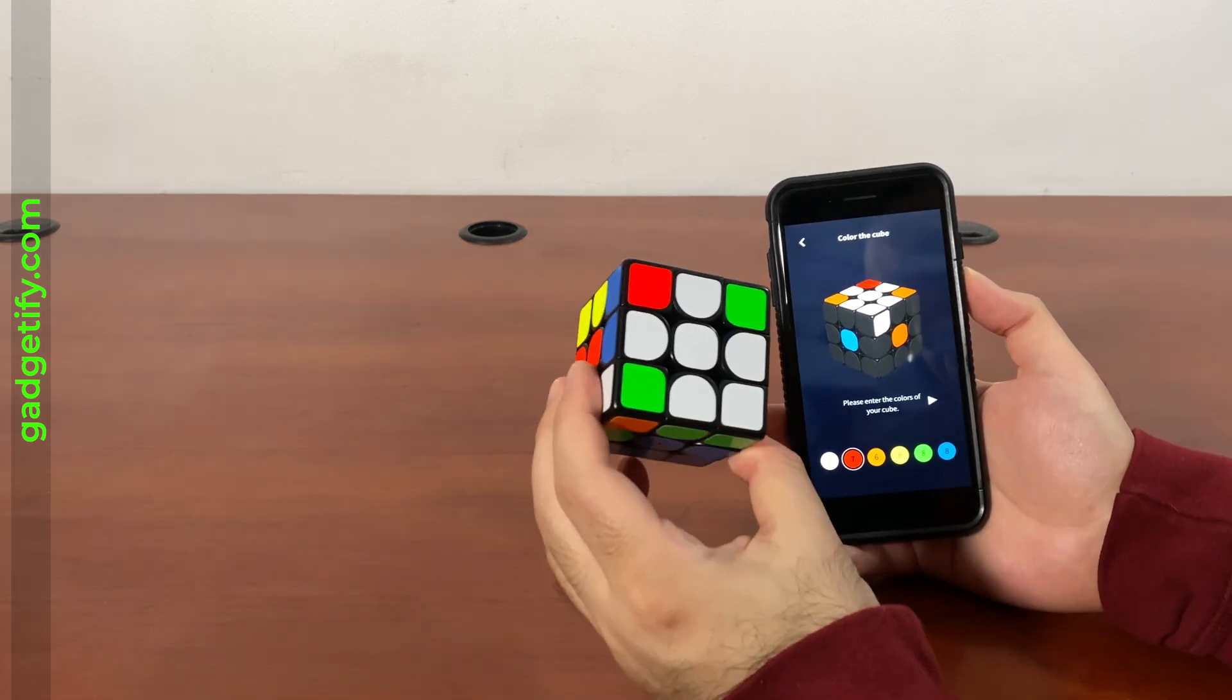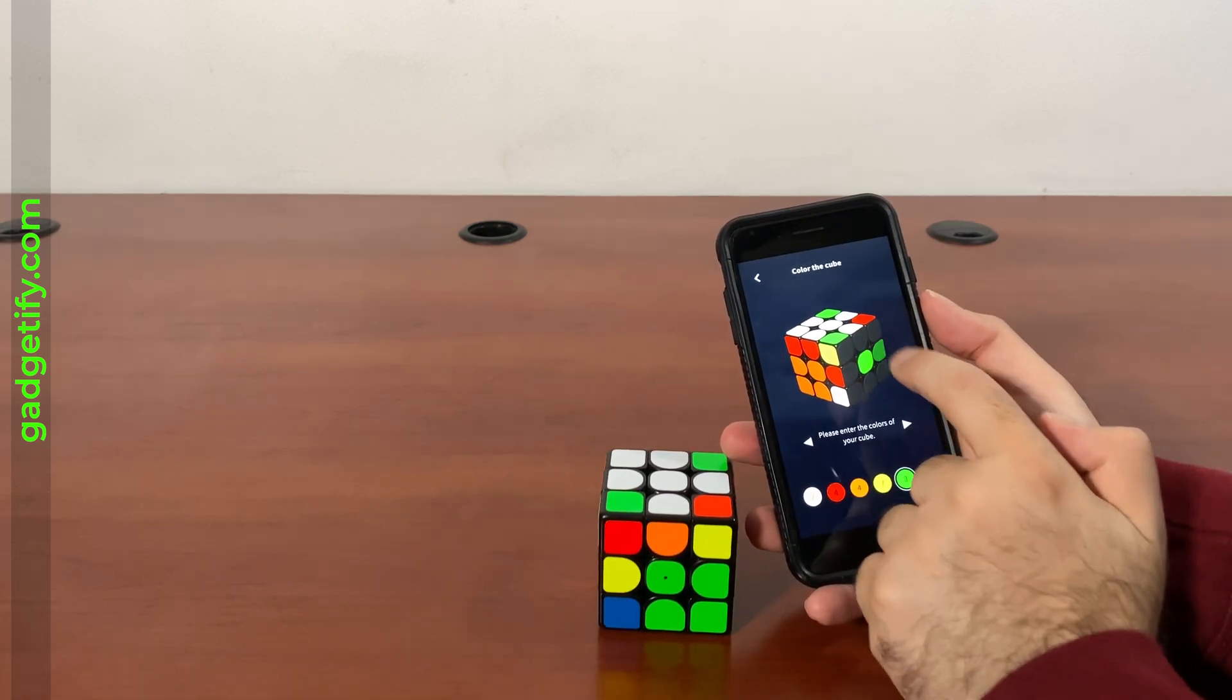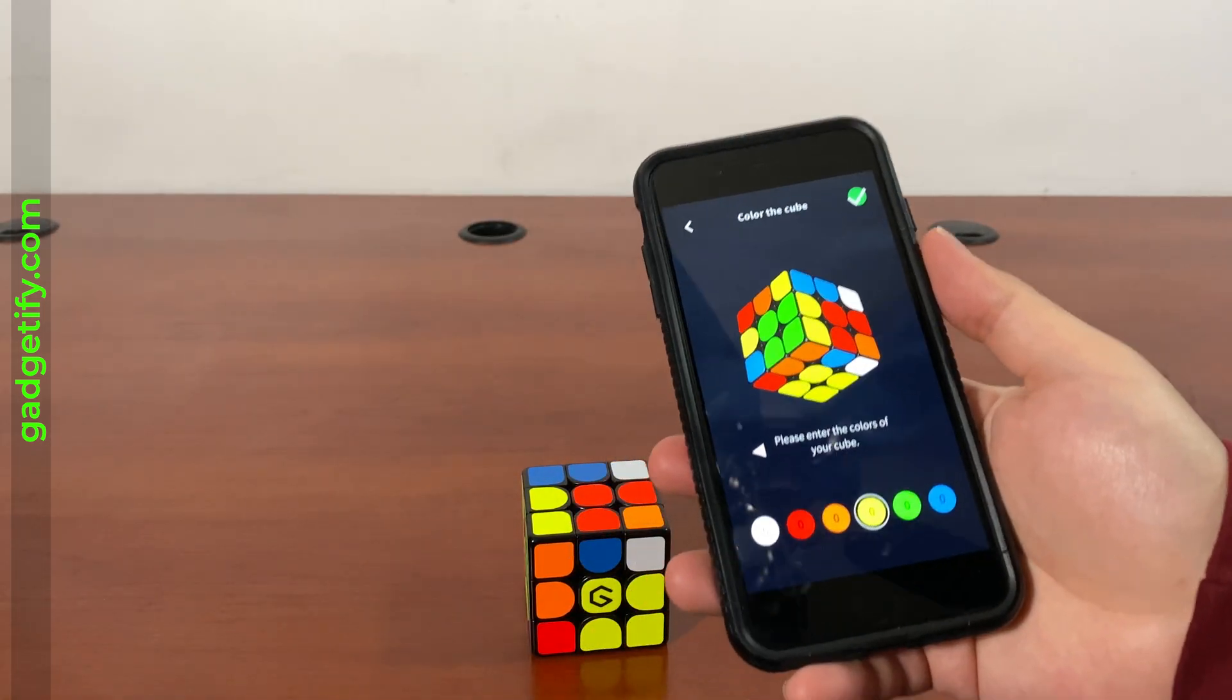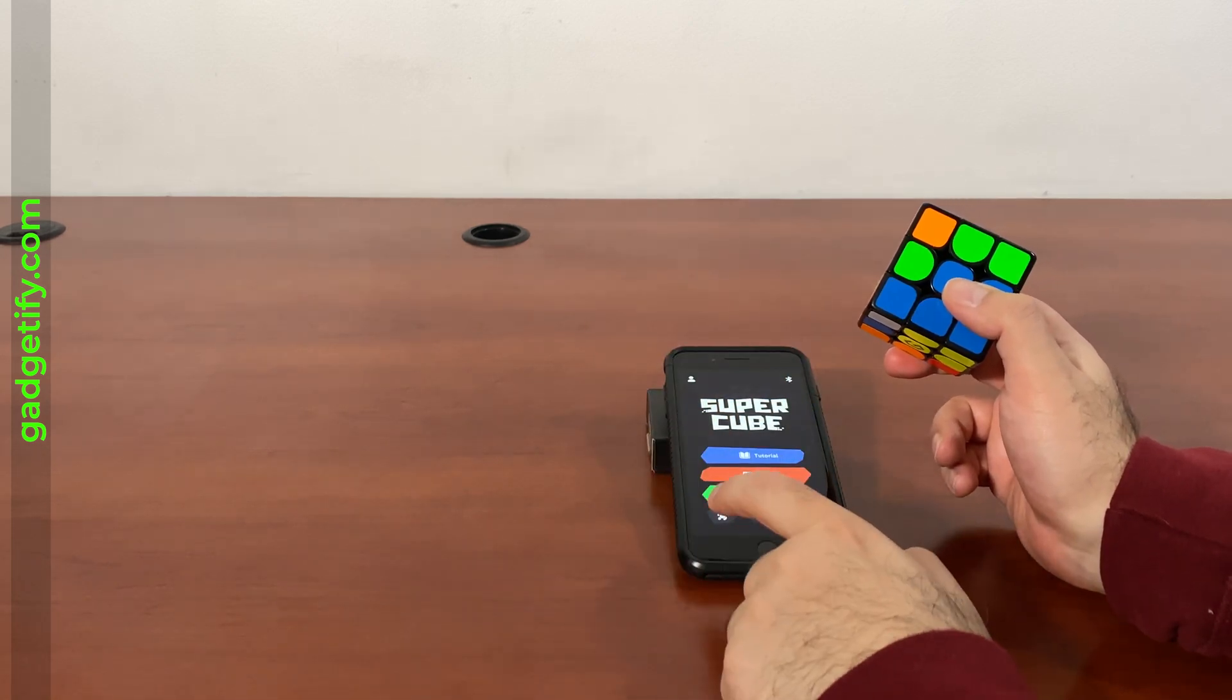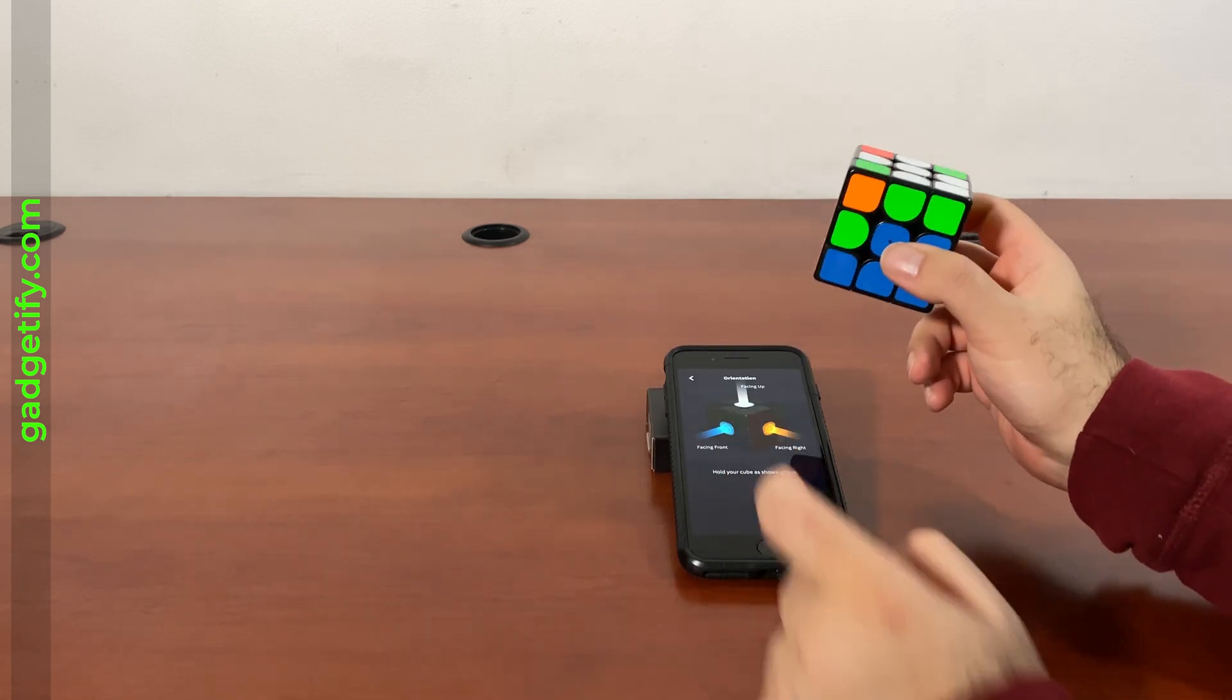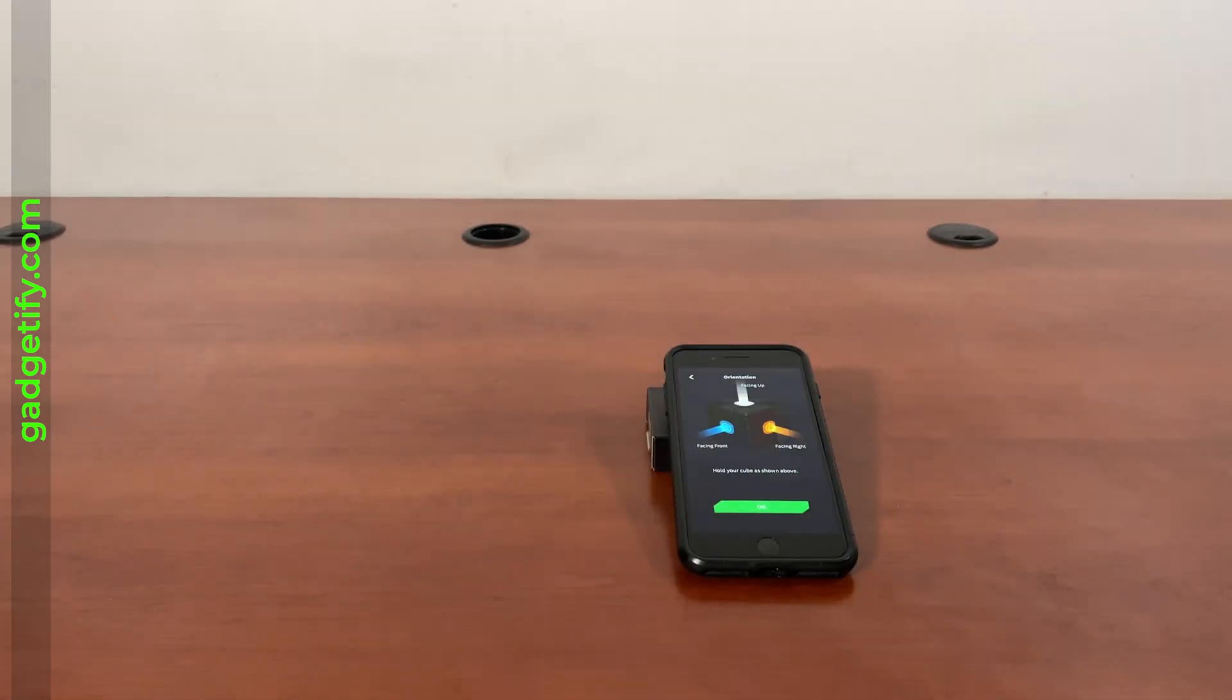Then you have to do it for all the others as well. So once you have entered all the colors the right way, just want to make sure it's the right way, then you can actually solve it. So I go back. It says follow the instructions to solve. Just have to make sure that your cube matches what the app is saying.